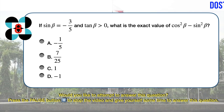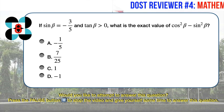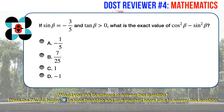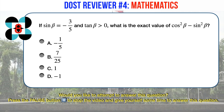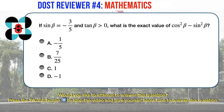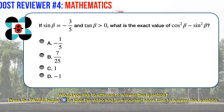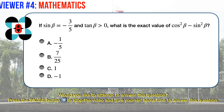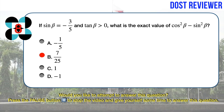Math question number 8. If sine beta equals minus 3 over 5 and tangent beta is greater than 0, what is the exact value of cosine squared beta minus sine squared beta? Options: A. minus 1 fifth, B. 7 over 25, C. 1, D. minus 1. The correct answer is B, 7 over 25.